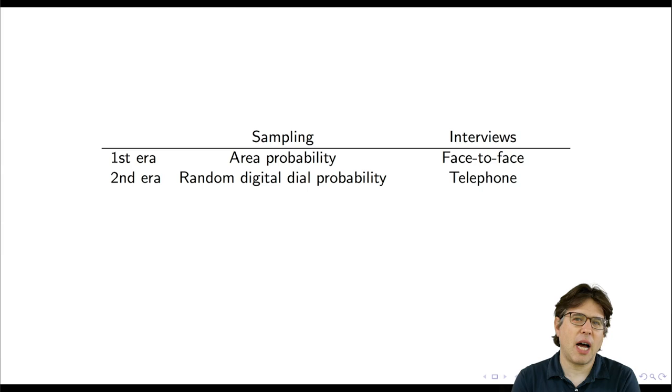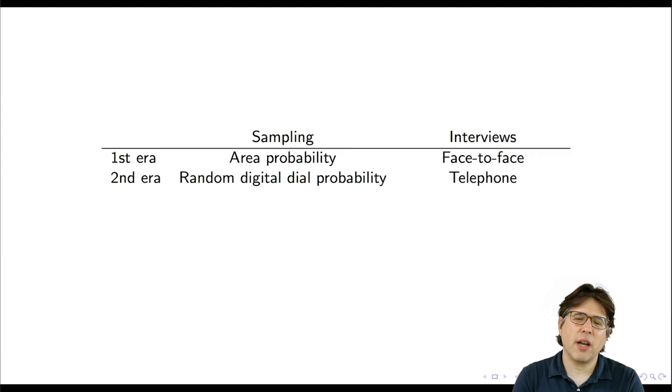Here we have a change in technology changing the way survey data is collected. We switched from area probability sampling to random digit dial as the predominant technique — randomly dialing phone numbers and talking to people on the telephone instead of face-to-face. When this transition happened it was highly contested. Researchers said we don't really know how to do random digit dial correctly, and it wasn't until 1979 that Waksberg and Matowski published their paper in the Journal of the American Statistical Association that worked out the formal technical properties of random digit dial as we know it today.